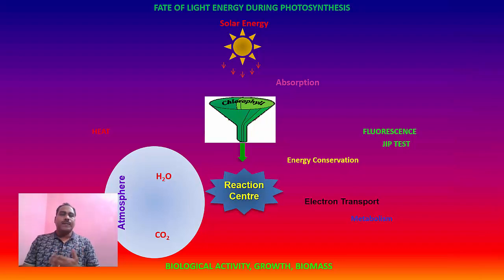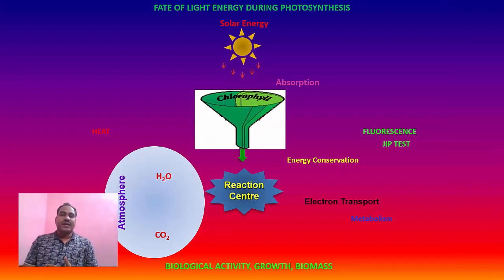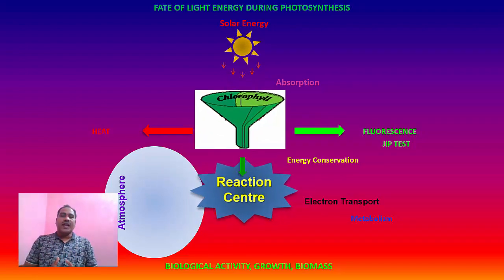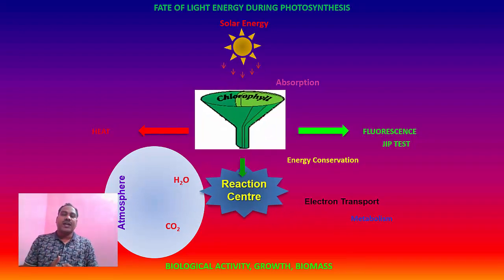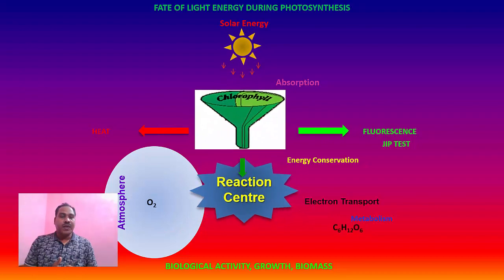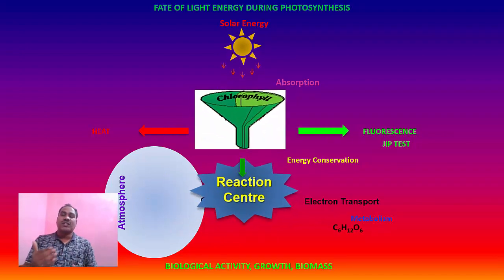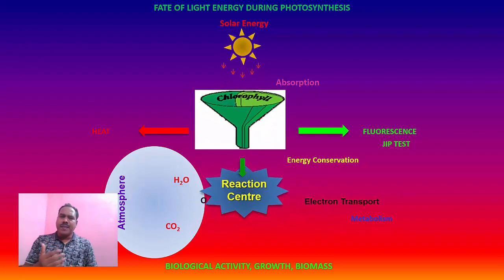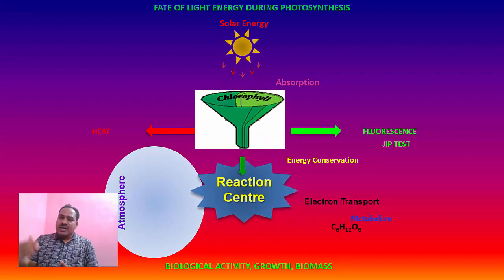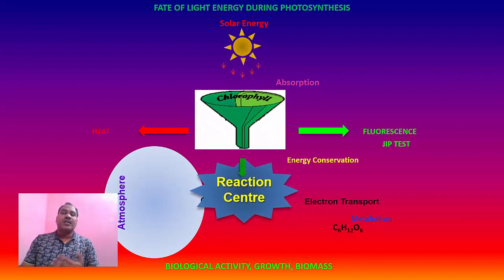If we see the fate of light energy during photosynthesis: when sunlight falls on the chlorophyll molecules, the major part of this light energy is converted into chemical energy in the form of ATP and NADPH, which is ultimately used for the production of carbohydrates by taking carbon dioxide and water. A small fraction of energy is also dissipated in the form of heat, known as thermoluminescence, and a very small portion is dissipated in the form of fluorescence, which is directly related to the photosynthetic process.